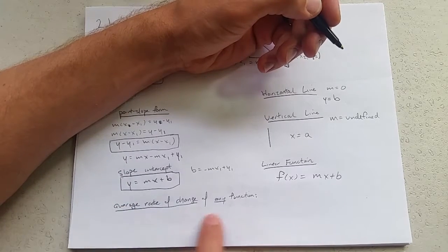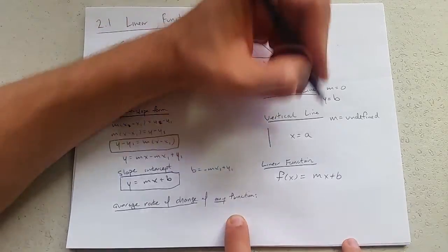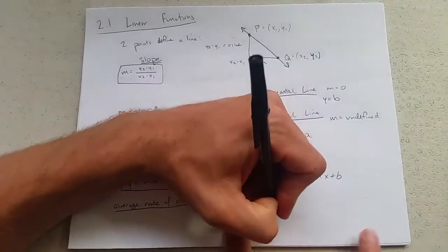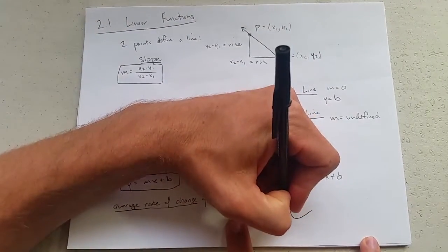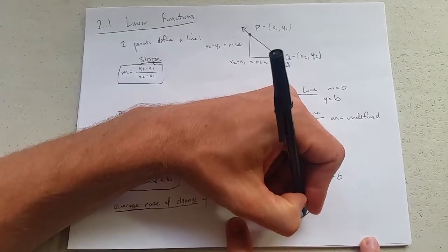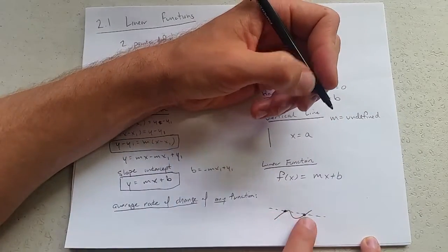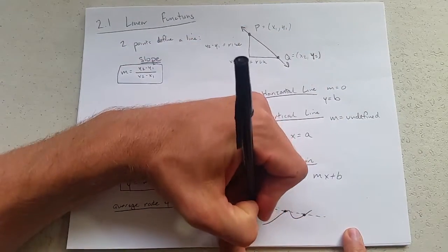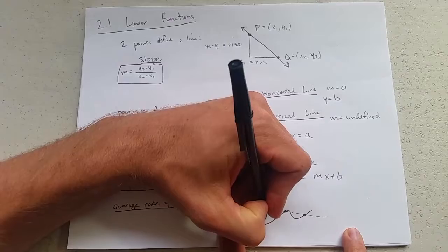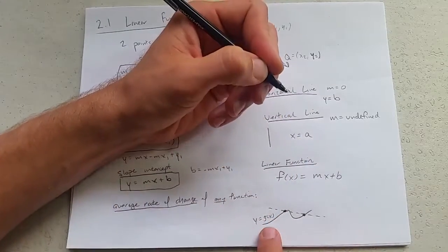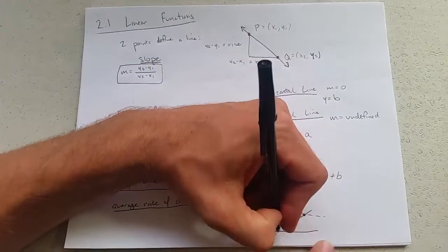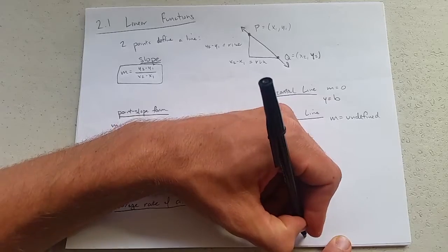Now for any function, you could find the average rate of change. What is that? Some function have some curves in it. If you look at two points, you can get the line between these two points. So we'll say this function, we'll call it g of x. So how do I get the average rate of change between a and b?